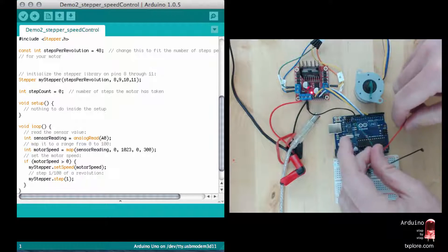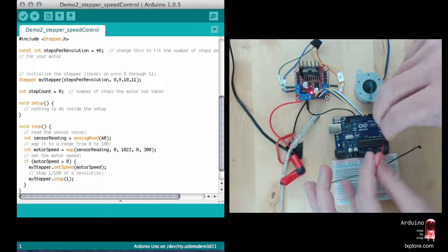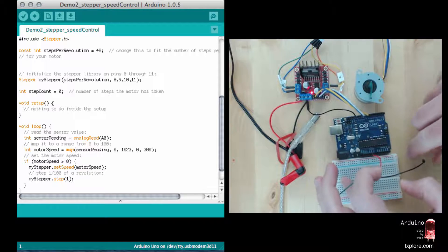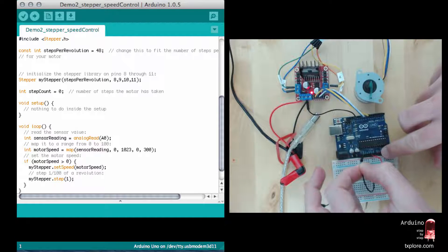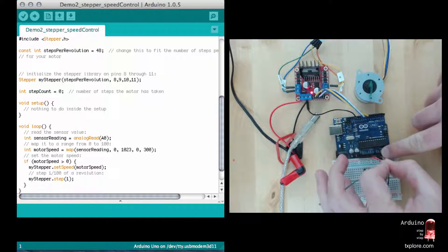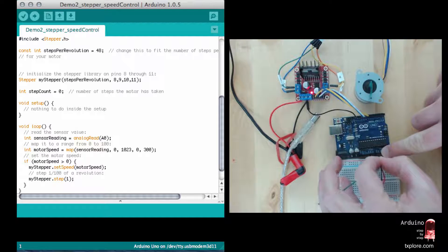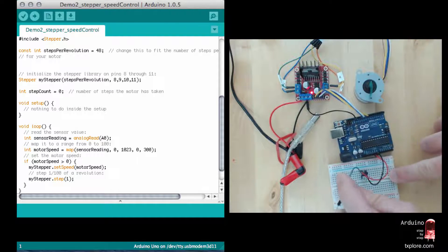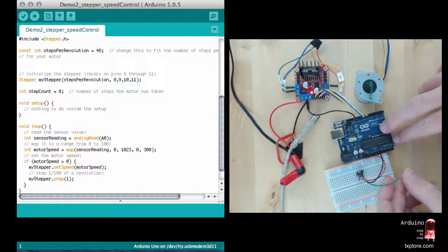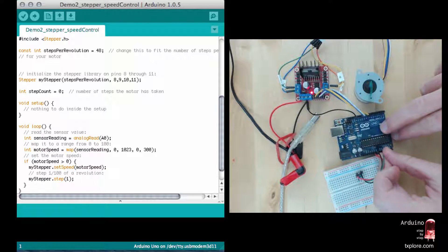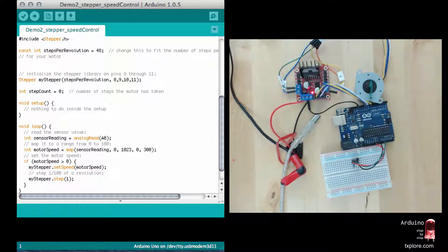I'm going to plug the red wire to 5 volts, the black one to ground. I'm going to use analog pin 0 to take measurements.